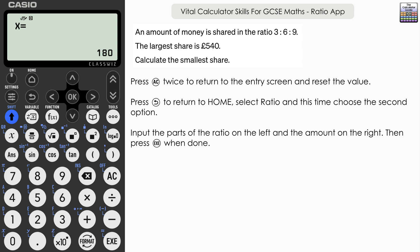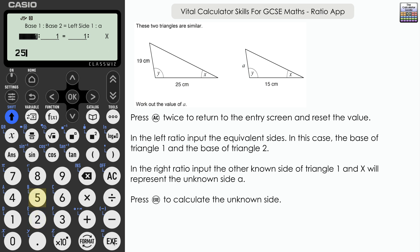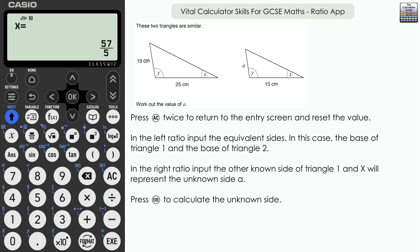We've got two similar triangles here, and I'll show two ways to answer this. The first way, with X on the right-hand side: on the left-hand side of the equals I'll input the two known corresponding sides — the bases. So 25 for the large triangle and 15 for the small triangle. On the right-hand side, the known side of the large triangle is 19, and X is the unknown side on the smaller triangle. Press Execute twice — X equals 57 over 5. Format then Decimal: 11.4.